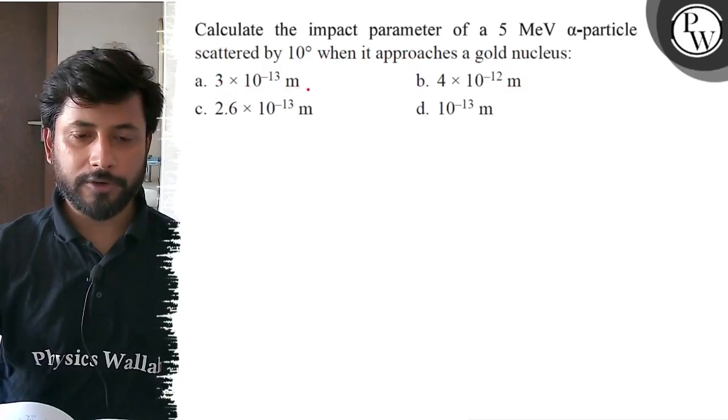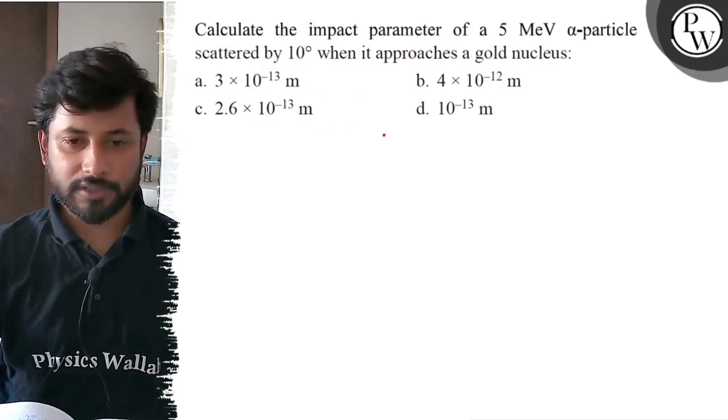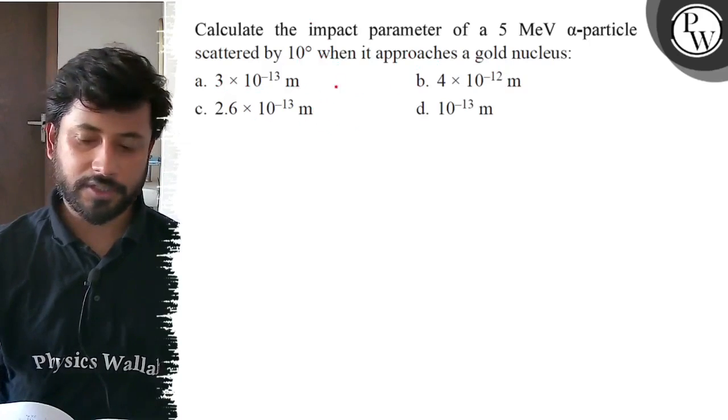Option A: 3 into 10 to the power minus 13 meter. Option B: 4 into 10 to the power minus 12 meter. Option C: 2.6 into 10 to the power minus 13 meter. Option D: 10 to the power minus 13 meter.